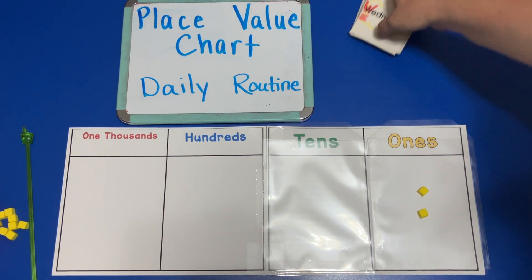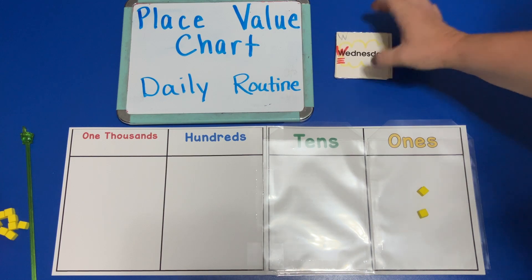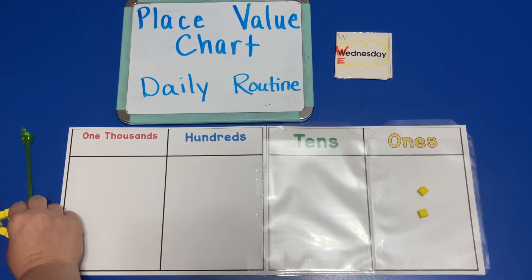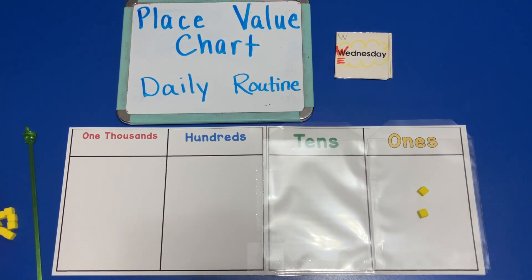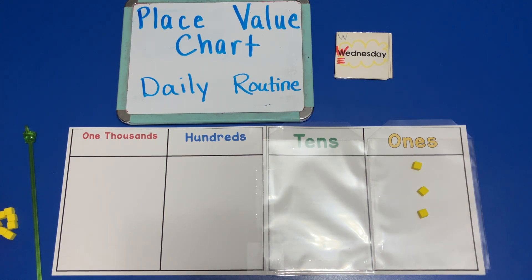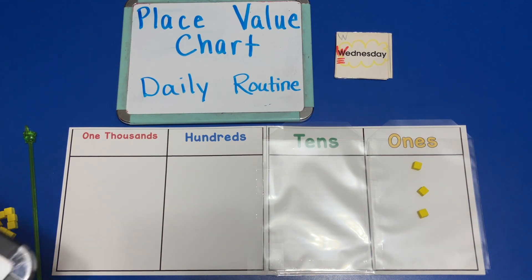Then it would be Wednesday, and on Wednesday we would add another one to our place value chart. And then on Wednesday we would say we have three ones in the place value chart.